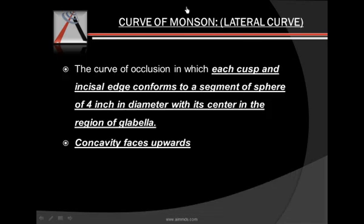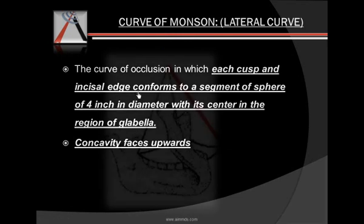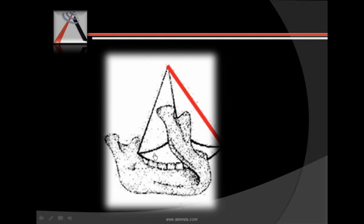Then we have the curve of Monson, or the lateral curve. What Monson did was try to conform all the cusps and incisal edges to a segment of a sphere — a three-dimensional orientation of the cusps of the teeth. In the diagram, if you take a part of the sphere, all the teeth will touch this convex surface of the sphere. The radius is again four inches.